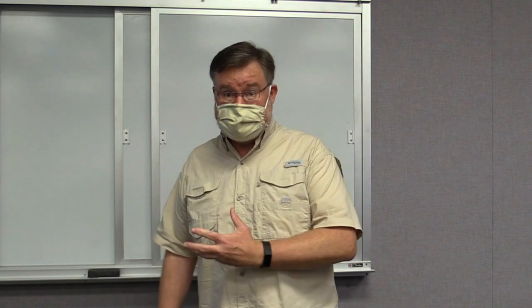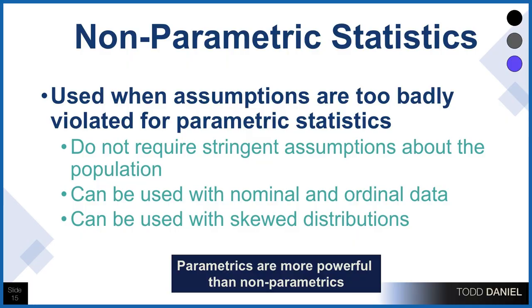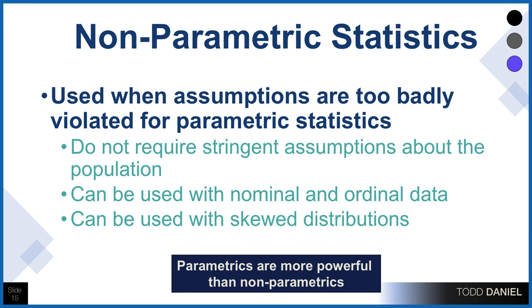Non-parametric statistics are the alternative to the parametric statistics we've been learning about. Each parametric statistic, like a t-test, will have a non-parametric alternative test that we could use in case the assumptions were violated so badly that we simply couldn't use a parametric test. The advantage of a non-parametric test is that the requirements are not as stringent — they don't require the same assumptions. So if we have nominal or ordinal data, or scale data that's highly skewed, we could use a non-parametric test as an alternative. However, non-parametric tests are not as powerful, meaning they're not as likely to find statistical significance, so we still want to be sure we have a large enough sample size to account for that.